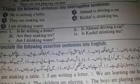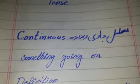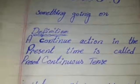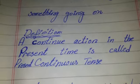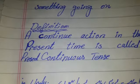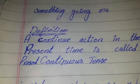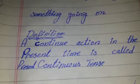'Raha hoon.' Now we have learned some sentences in Urdu. First of all, we will define present continuous tense. What is present continuous tense? A continuing action in present time is called present continuous tense. It means that an action is going on in the present — that is called present continuous tense.